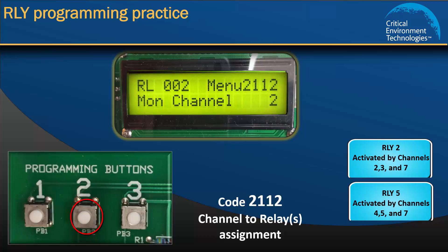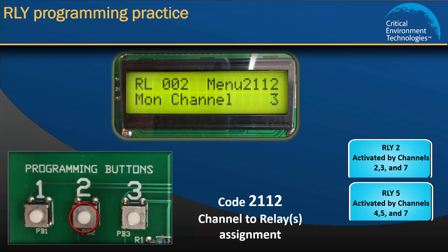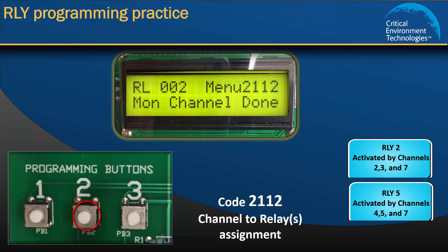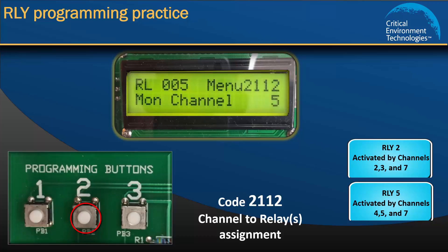Press 2 again to move on to Relay 2. We want Relay 2 to be activated by Channels 2, 3, and 7. The display should show Relay 2, Channel 2. Press 2 to save and the display will show "Mon Channel done." Press 3 to increase the Mon Channel number to 3 and press 2 to save. Press 3 to increase the Mon Channel number to 7 and press 2 to save. The display will show "Mon Channel done." Now we have assigned Channels 2, 3, and 7 to Relay 2. Press 2 again to move on to Relay 3, again to Relay 4, and once more to Relay 5. Stop at Relay 5.